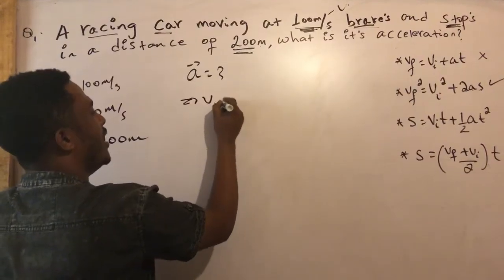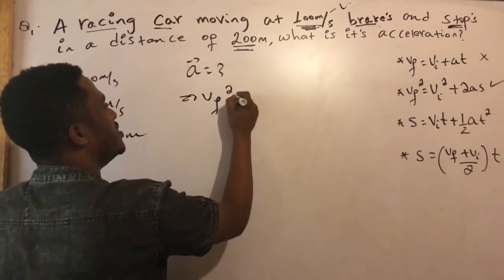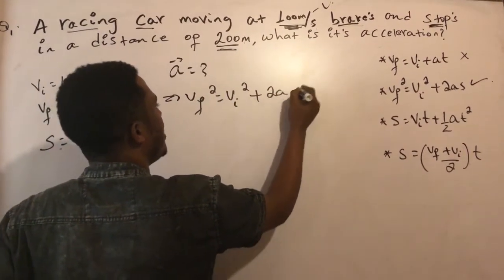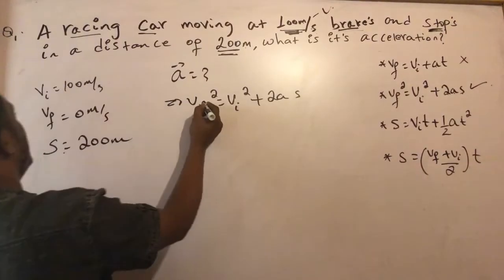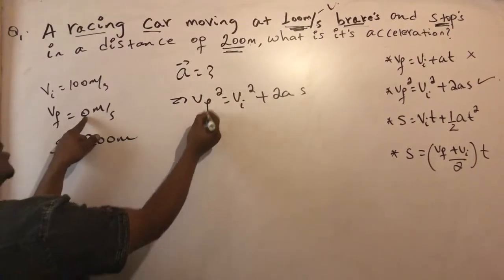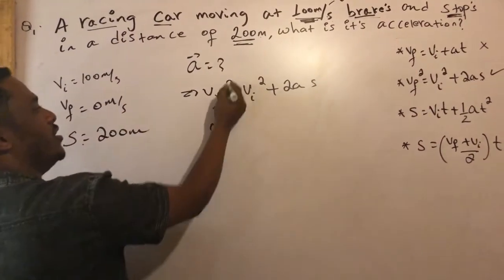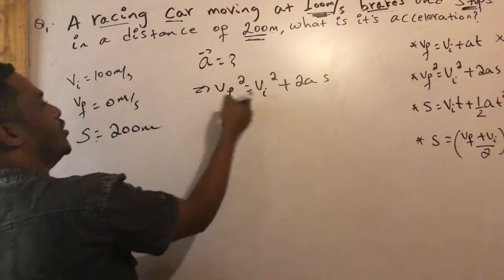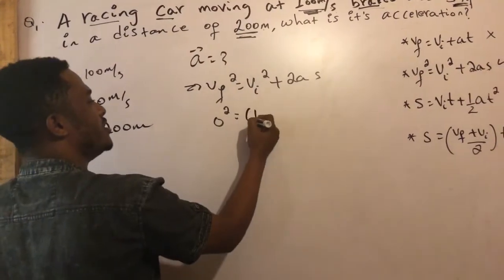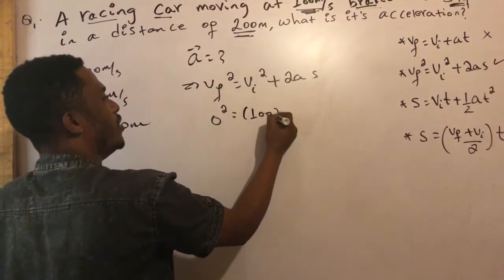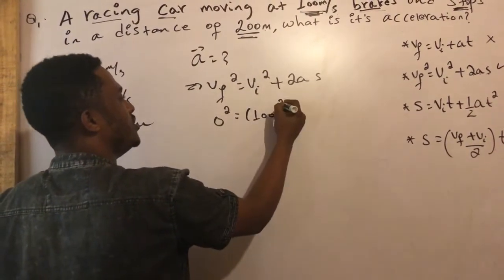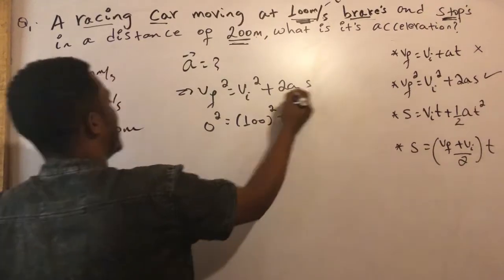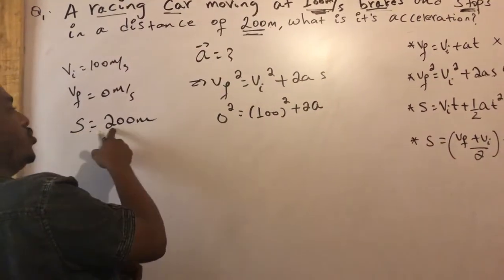V final squared equals V initial squared plus 2As. So 0 squared equals V initial squared plus 2 times acceleration times distance.